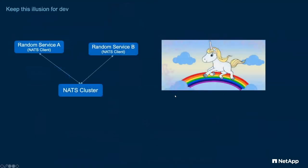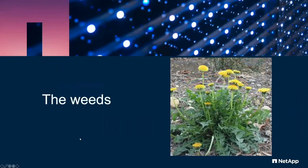However, we want to keep this illusion for development, where you're just a client talking to another client with a single NATS cluster. This is the unicorn and rainbows vision. We like it, and we want to keep that for development.